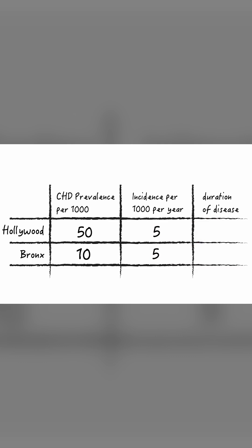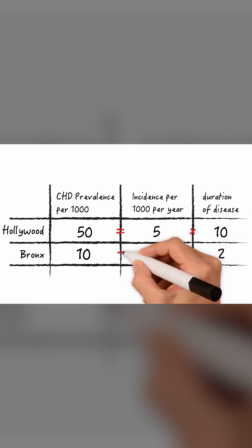Duration of disease is 10 years in Hollywood due to better care, whereas in the Bronx people die from CHD after 2 years. So in fact the higher prevalence in Hollywood is just an expression of better care of an incurable disease. Prevalence is equal to incidence times duration: 5 times 10 is 50, and 5 times 2 is 10.